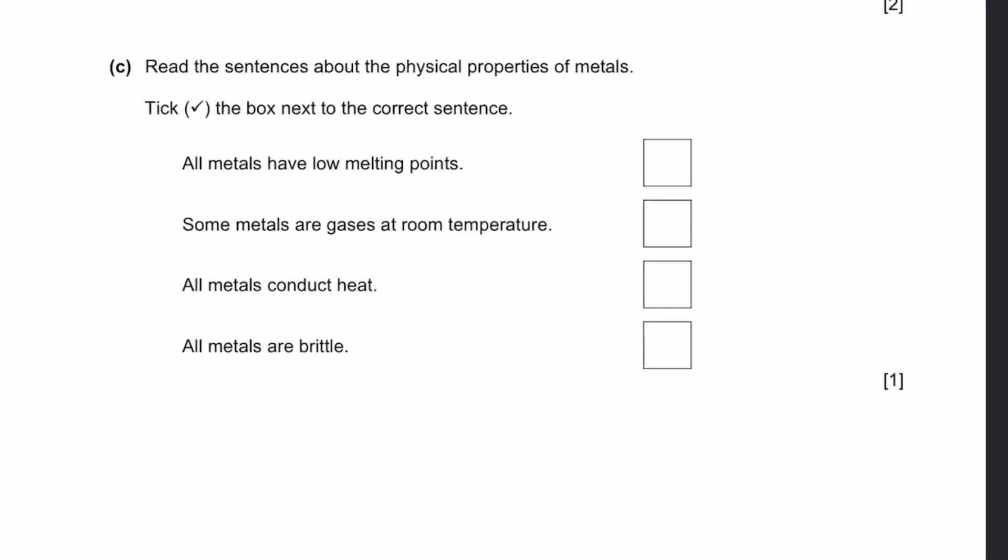C. Read the sentences about the physical properties of metals. Tick the box next to the correct sentences. All the metals have low melting points - False. All metals have high melting points. Some metals are gases at room temperature - False. They're usually solids and maybe liquids, but they're never gases.